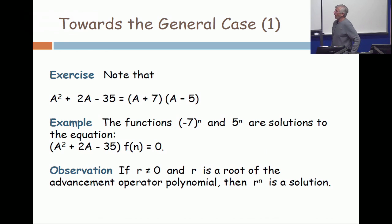And so, the more general observation is that whenever you have a root of the advancement operator equation, then the root to the Nth power is going to be a solution. And I should emphasize that because you have those two solutions, you have every linear combination of them. And that's because the solution space is a vector space. It's a subspace.